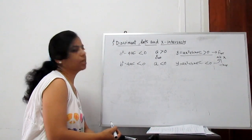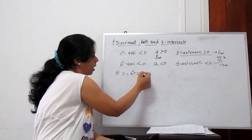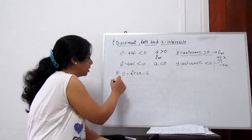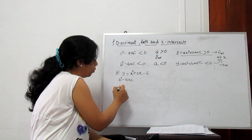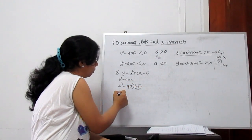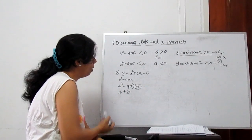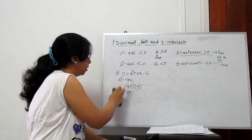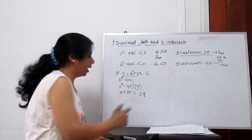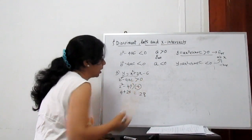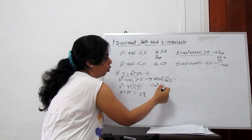Now, determine the intersection of the given curve y = x² + 2x − 6. How many points does it intersect? Just find B² − 4AC. B = 2, so 2² = 4; 4A·C = 4(1)(−6) = −24. So 4 − (−24) = 4 + 24 = 28. It is positive and greater than 0, meaning real and distinct — two roots — and the curve cuts the x-axis at 2 points.